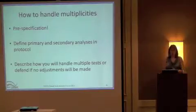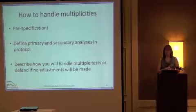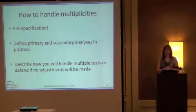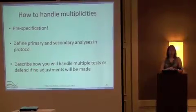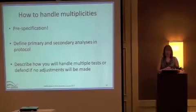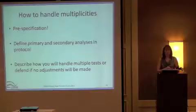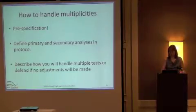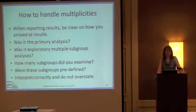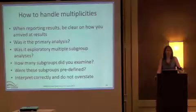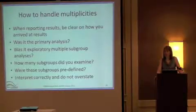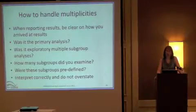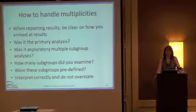Pre-specification is huge. Define your primary and secondary analyses in the protocol, so it's all laid out ahead of time before you look at the data. The data should not lead you toward what is primary or secondary — pre-specified ahead of time. Then you need to describe before you start looking at the data how you're going to handle the multiple tests if you do have a multiplicity issue. If you don't adjust, you need to defend why no adjustments will be made. Be very clear about it. When you report the results, be very clear on how you arrived at the results — state if it was the primary analysis.